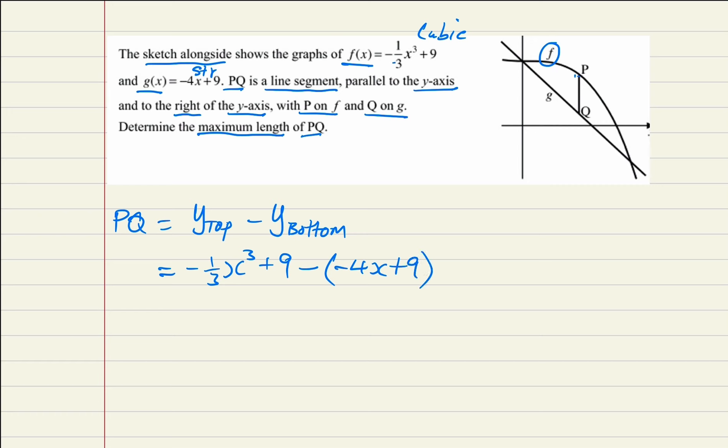Then we simplify further: this is -1/3 x³ + 9 + 4x - 9. Hence, this equals -1/3 x³ + 4x because these are additive inverses. So this is our PQ, this is our length.